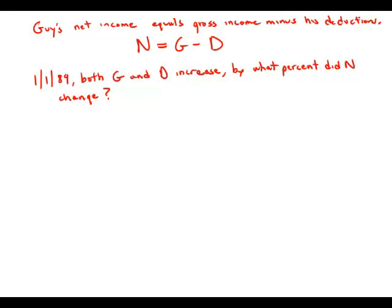That was a long time ago - when Bush Senior was president and the Berlin Wall was still standing. But on January 1st, 1989, both his gross income and his deductions increased. By what percent did the net increase?